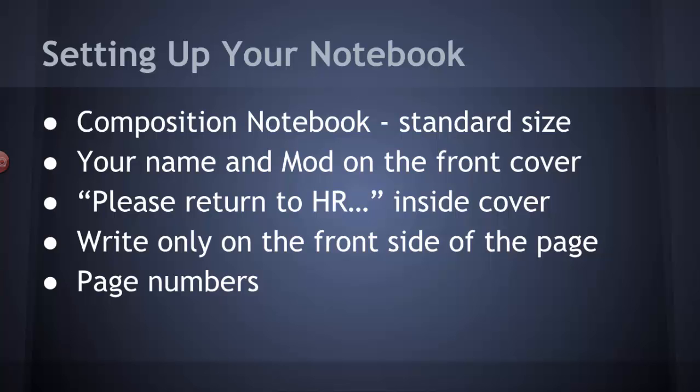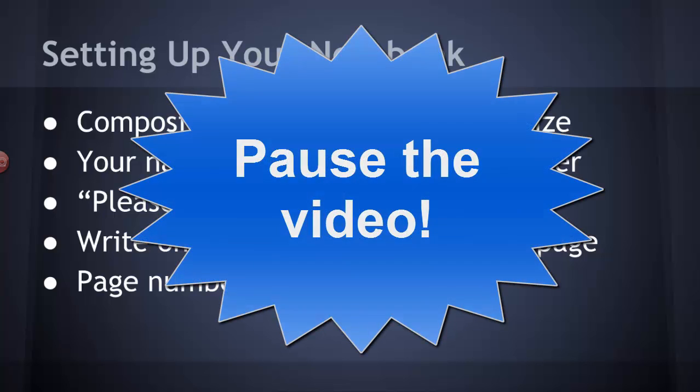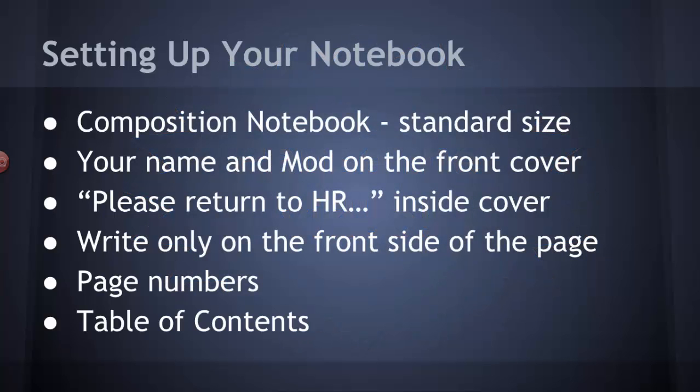Finally, every time you do a new experiment, you want to make an entry in the front of the book in a table of contents. That way it's easy for somebody who's reading the lab book to find a particular experiment. That's also why you have page numbers.